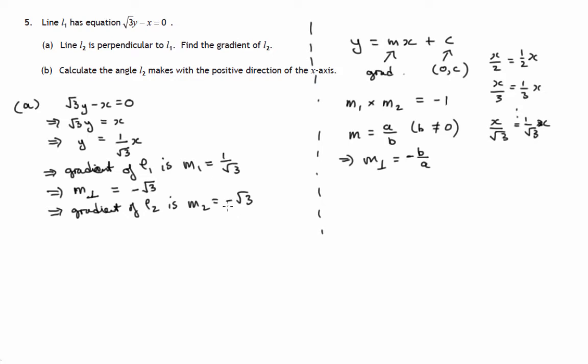And this line that has a gradient of negative root 3, we're asked what angle it makes with the positive direction of the x-axis. Now in this case, our result is that if we have some line L that makes an angle of theta, remember the definition of gradient is the distance up or down divided by the distance along.